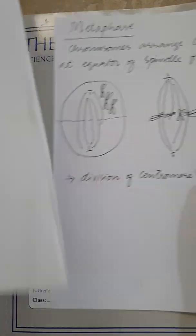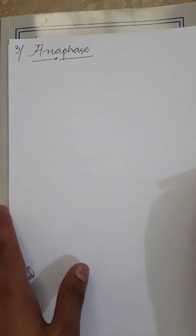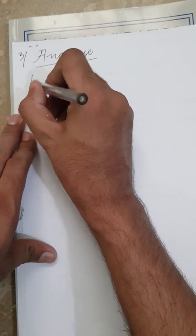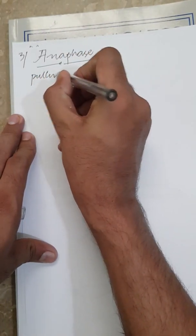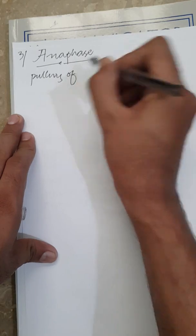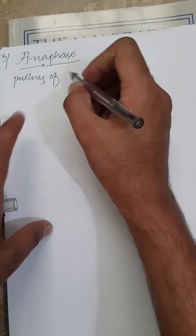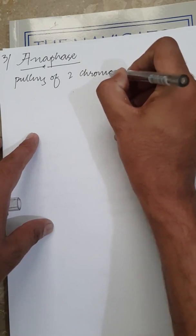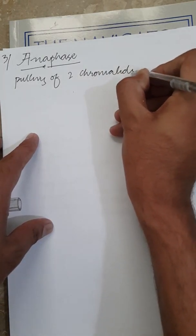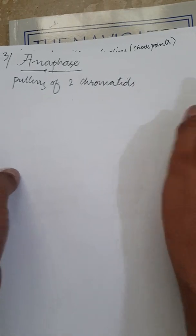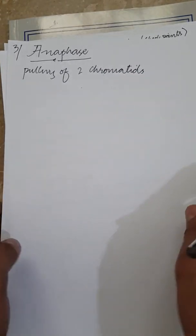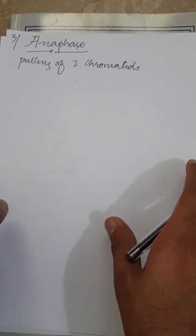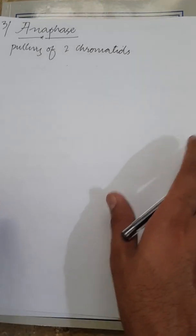What will happen in anaphase is there will be the pulling of the two chromatids to their two opposite poles.